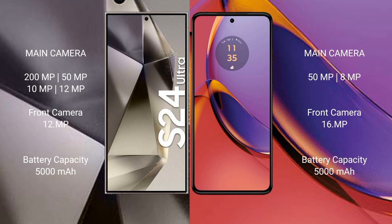Motorola Moto G84 has a dual rear camera setup: 15MP and 8MP, with a 16MP front camera. Samsung Galaxy S24 Ultra has a 5000mAh battery with 45W fast charging support. Motorola Moto G84 also has a 5000mAh battery with 30W fast charging support.